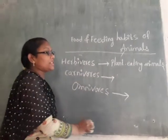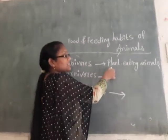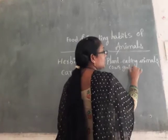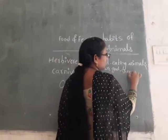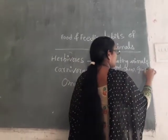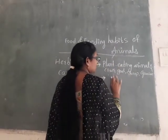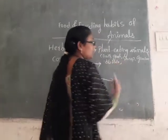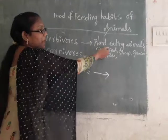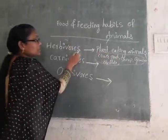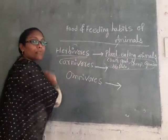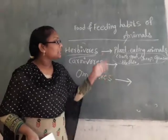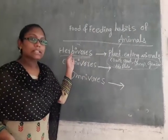Examples of plant-eating animals: cows, goat, buffalo, sheep, giraffe, elephants. These animals eat green plants and are all called herbivores.